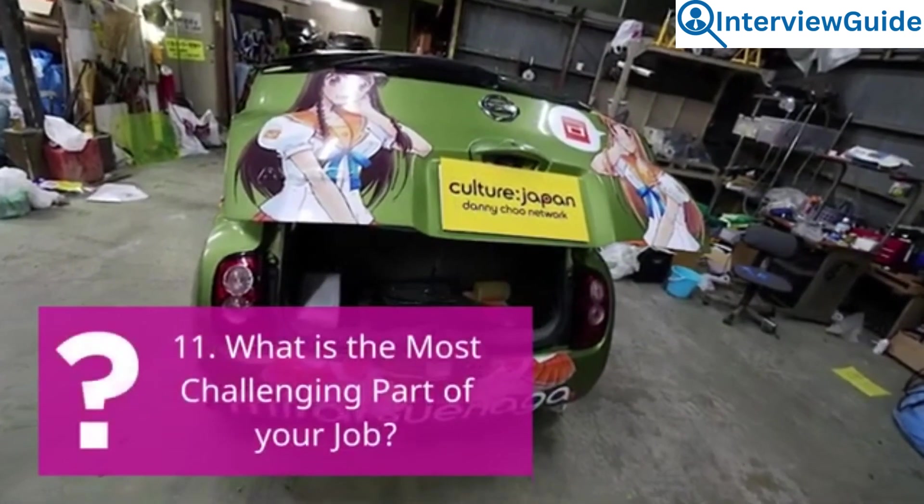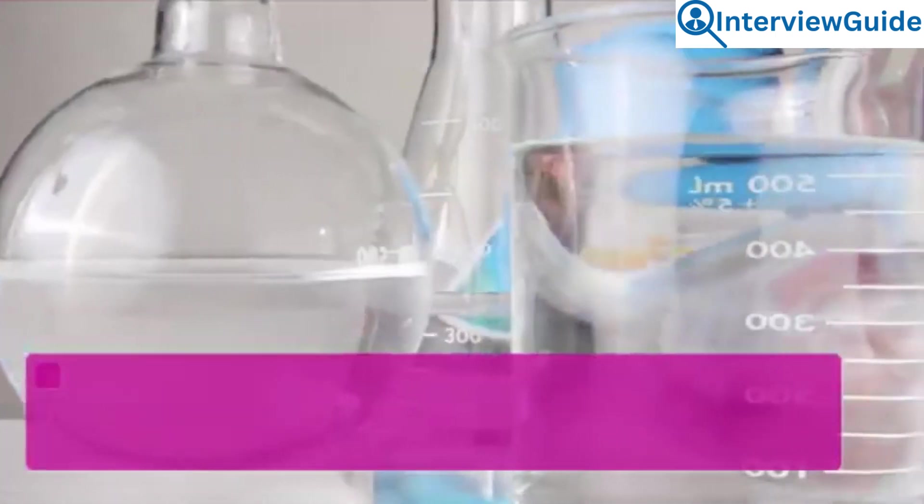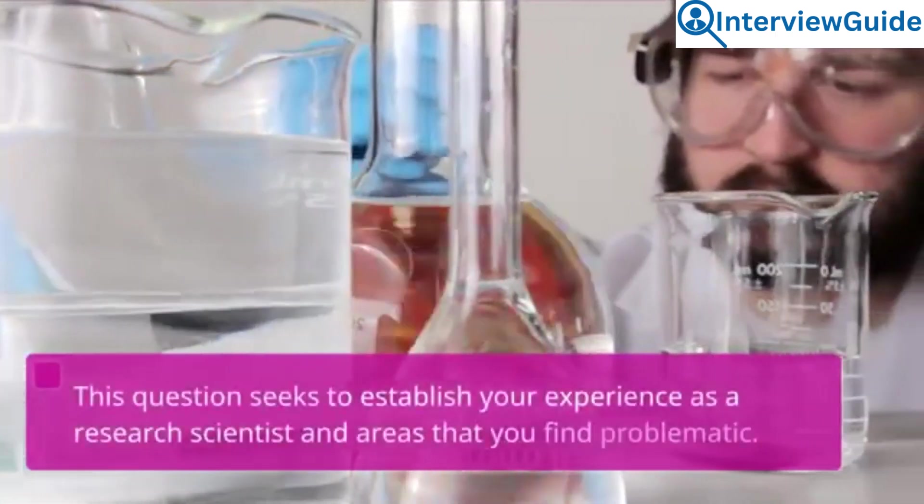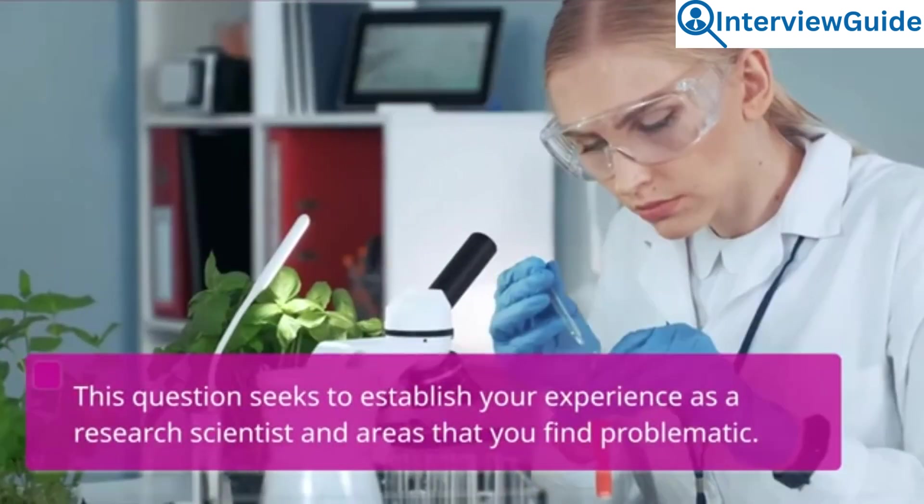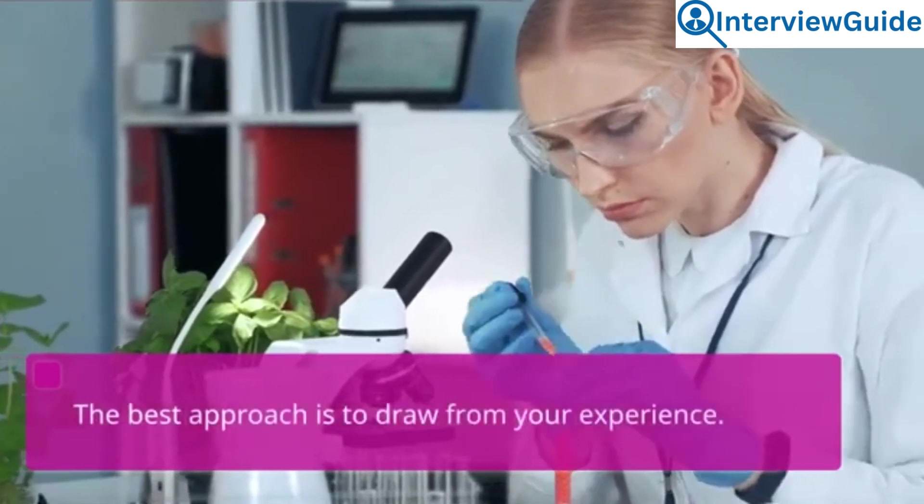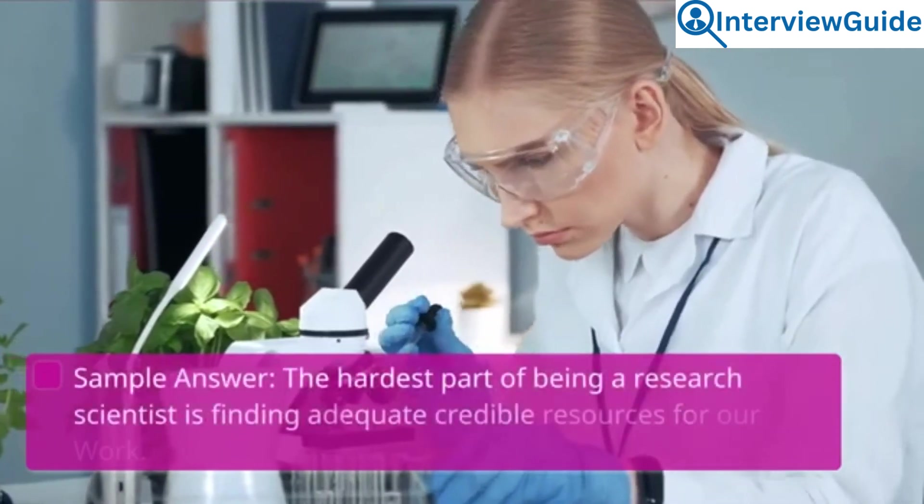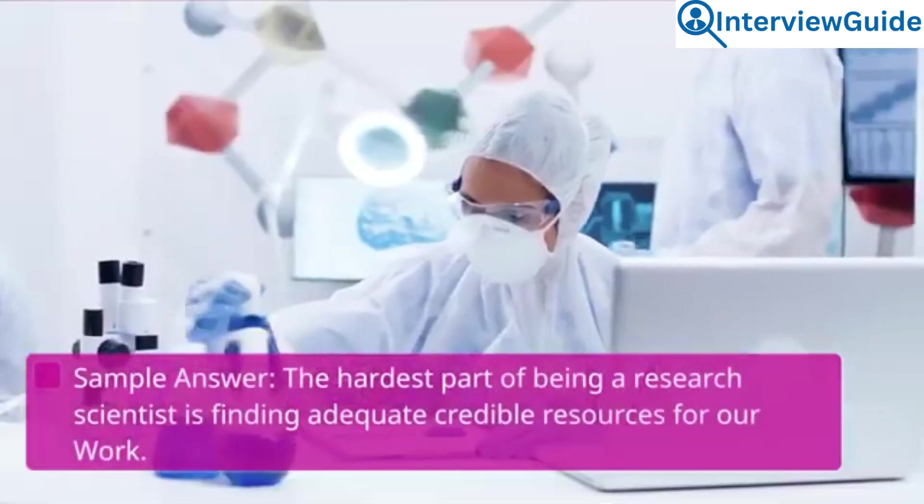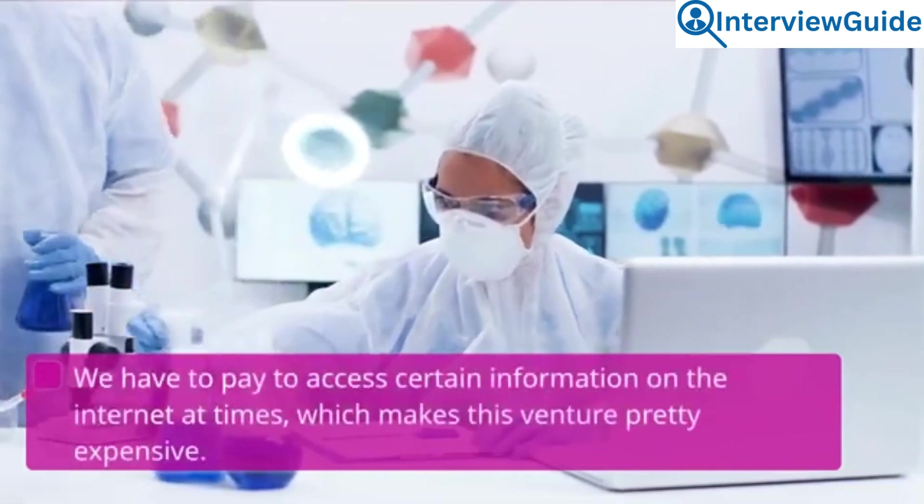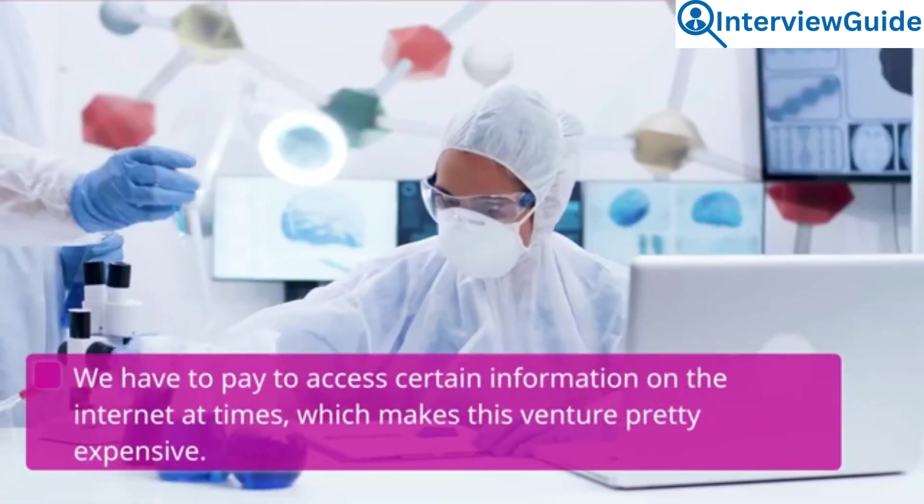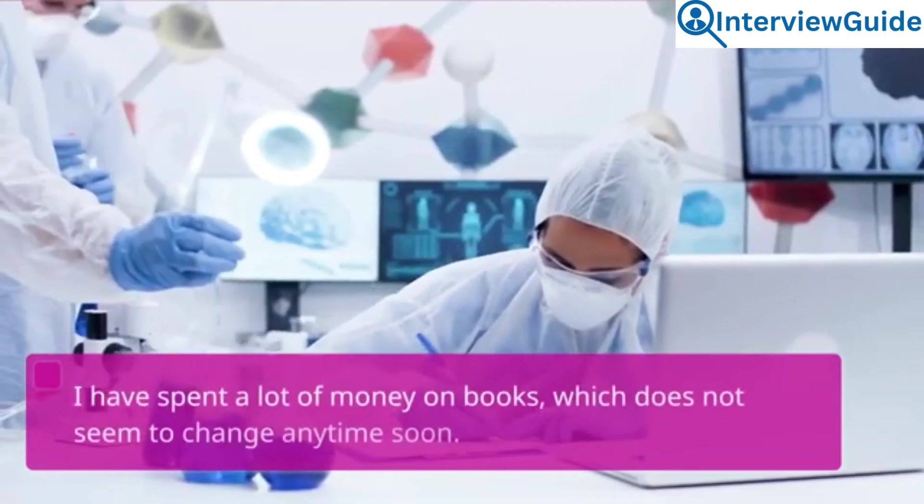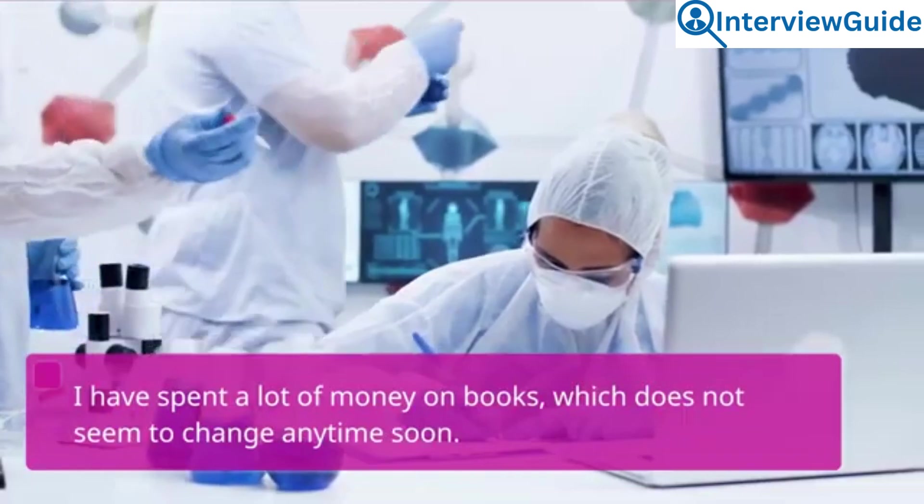Question 11: What is the most challenging part of your job? What is the most challenging thing about being a research scientist? This question seeks to establish your experience as a research scientist in areas that you find problematic. The best approach is to draw from your experience. Sample answer: The hardest part of being a research scientist is finding adequate credible resources for our work. We have to pay to access certain information on the internet at times, which makes this venture pretty expensive. I have spent a lot of money on books, which does not seem to change anytime soon.